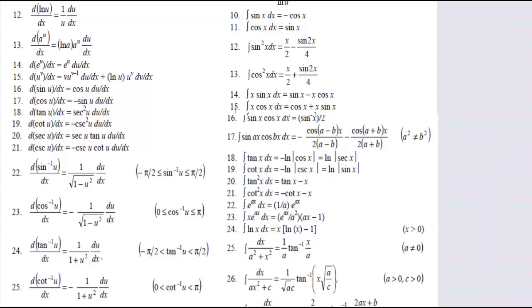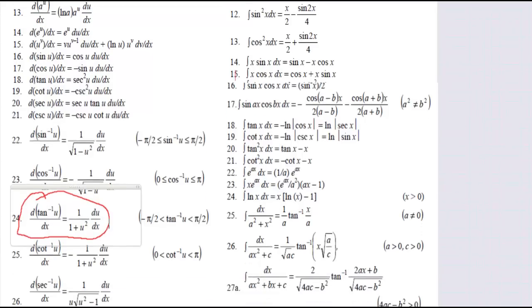So if we go back down here, we can recognize that that's the tangent minus 1, tangent inverse or something. But anyway, it's that one, number 24. Because we have 1 over 1 plus u squared.